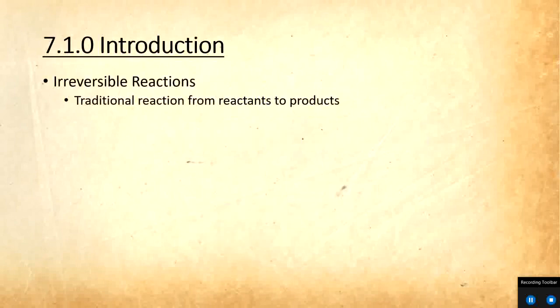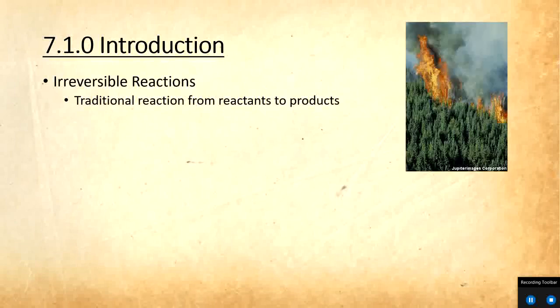Most reactions that we've done up to this point in the course are what we call irreversible reactions. We've studied things that go in one direction. So we start with reactants, they react, and they form products. You may not get 100% product depending on our percent yield, but we don't generally think about going backwards. An example would be combustion.